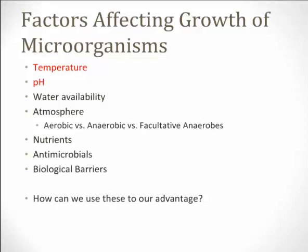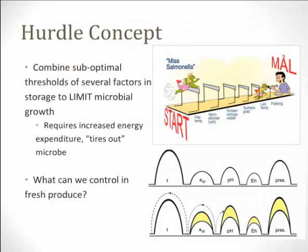How can we use these limiting factors to our advantage in trying to minimize contamination or minimize pathogen growth? The hurdle concept — if we have a pathogen that can survive at a range of temperatures, but we take it down to a little bit lower than what it's comfortable surviving at, we're already stressing that pathogen. Then we add possibly a lower pH that it's not comfortable at. It's essentially combining several thresholds to stress out the microorganism enough that it isn't able to survive and to limit microbial growth.